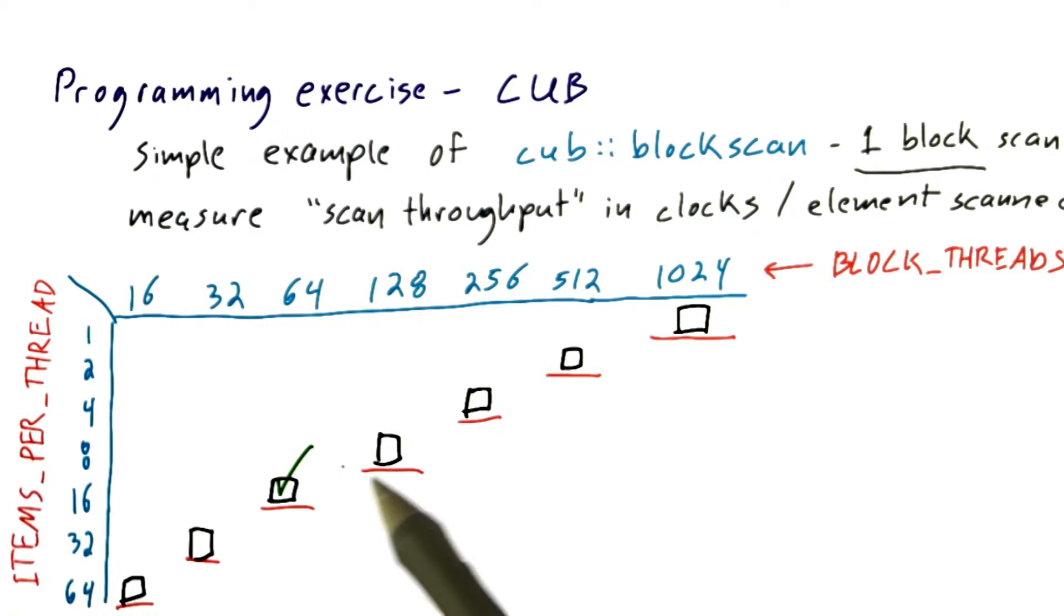The improvements get smaller and smaller as you approach this sweet spot because you're trading off increased granularity per thread for decreased parallelism.